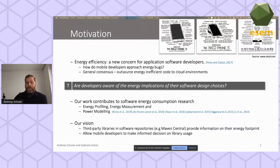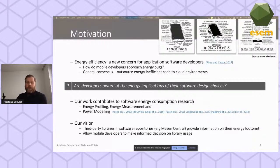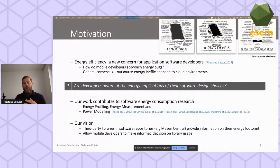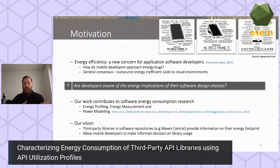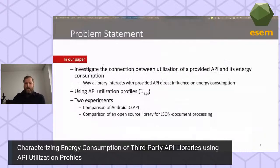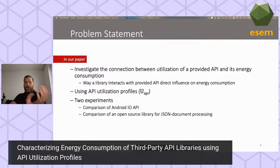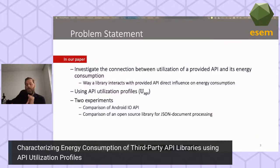The software energy consumption research field has shown considerable contributions in recent years, covering energy profiling, software energy measurement, and power modeling. Our work contributes to that field. We envision that in the future, third-party libraries maintained in software repositories like Maven Central or GitHub will provide information on their energy footprint, allowing mobile developers to make informed decisions about the energy implications of dependent libraries during development. In our paper we investigated a novel approach to software energy consumption profiling — specifically, the connection between utilization of the Android API through third-party libraries and their energy consumption.